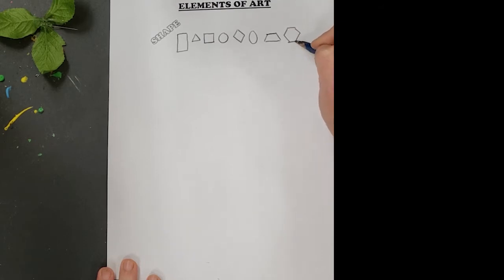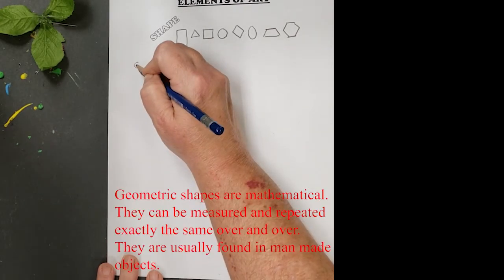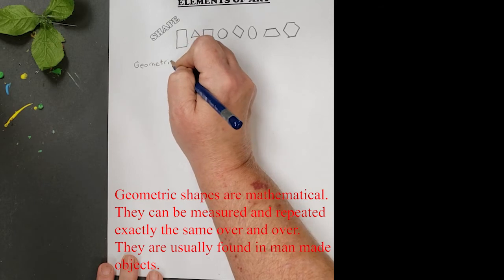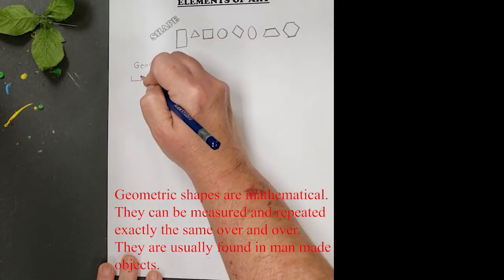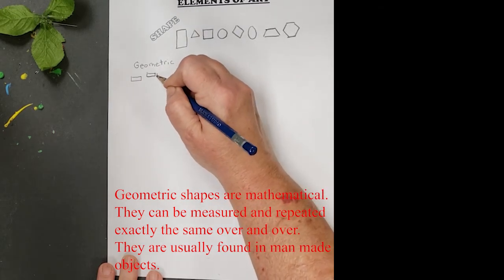Now these shapes are used by artists a lot. These are the basic shapes that we learned in early elementary school, and they fall under the category of geometric shapes. Geometric shapes are mathematical, and they could be reproduced the exact same shape, the exact same size, over and over. They're usually found in man-made objects.